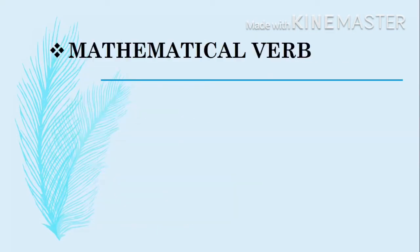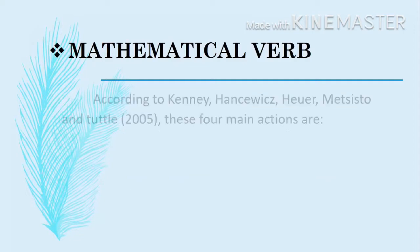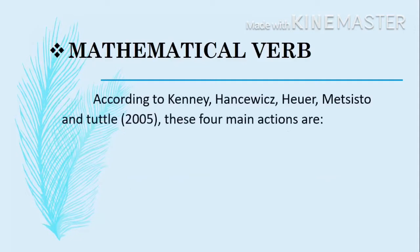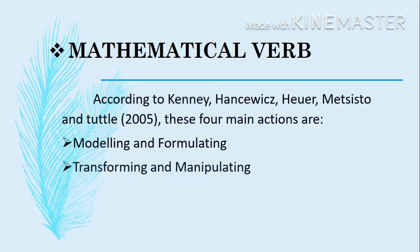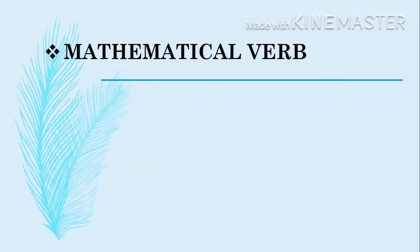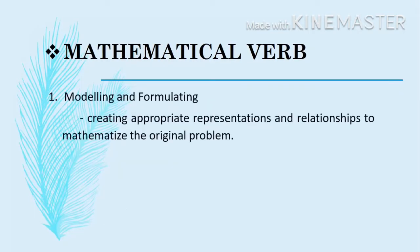Let's discuss the mathematical verb. According to Kenney et al. 2005, these four main actions are: modeling and formulating, transforming and manipulating, inferring, and communicating. We'll use the steps in solving a word problem as an example. The first one, modeling and formulating, is defined as creating appropriate representations and relationships to mathematize the original problem.